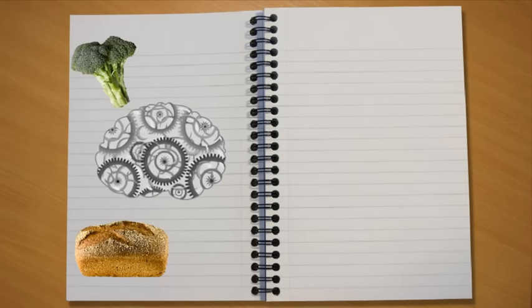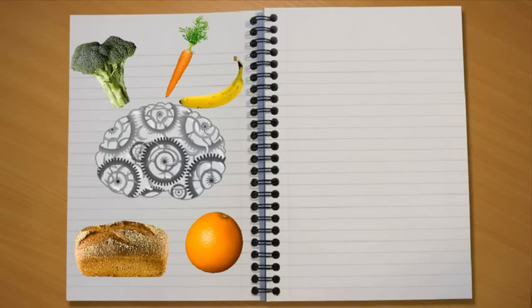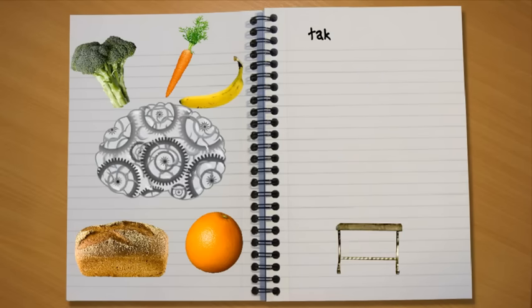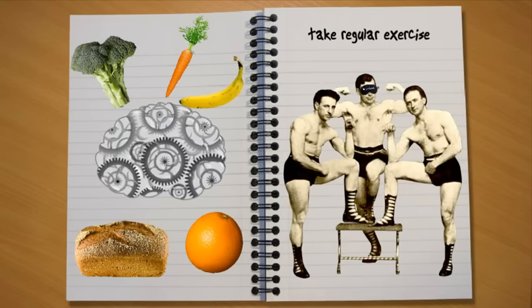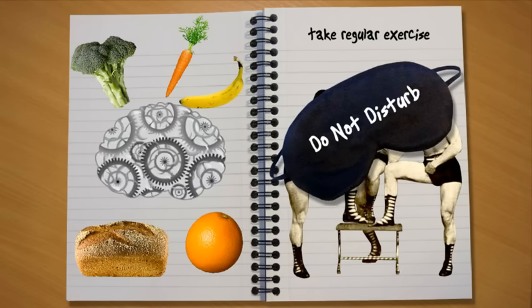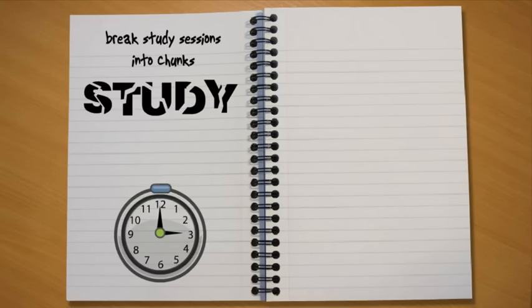Make sure that you eat enough healthy foods that will give your brain the minerals it needs to function well. Drink plenty of water to make sure that you stay properly hydrated. Take regular exercise to increase the level of oxygen in your blood. Make sure that you get enough rest and sleep. Break your study sessions into chunks to aid concentration and take regular brain breaks to help maintain focus.